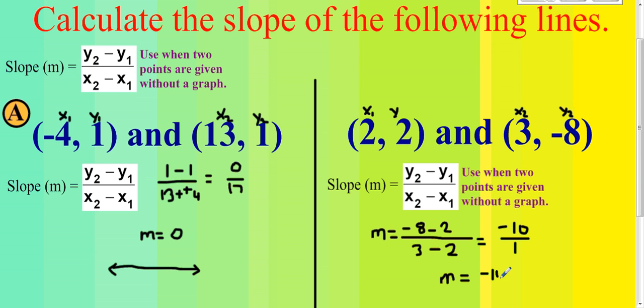So this line has a slope of negative 10. When you look at this line on a graph, you expect a line with a negative slope to go down from left to right — and that's what makes it negative. And that's the end of the video.